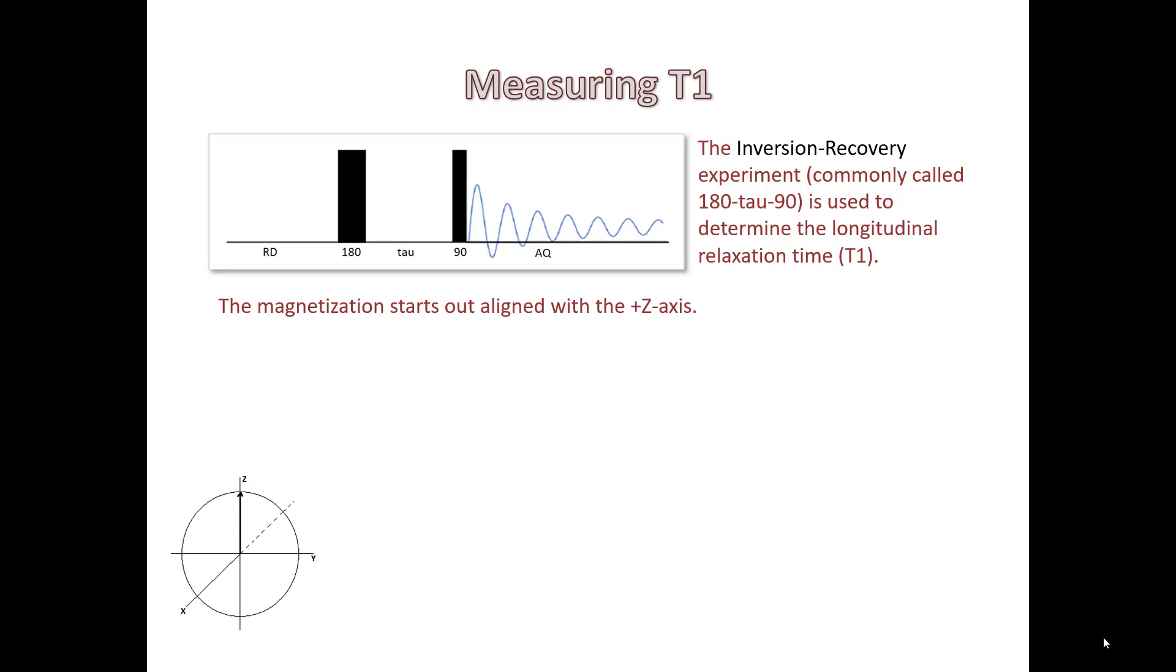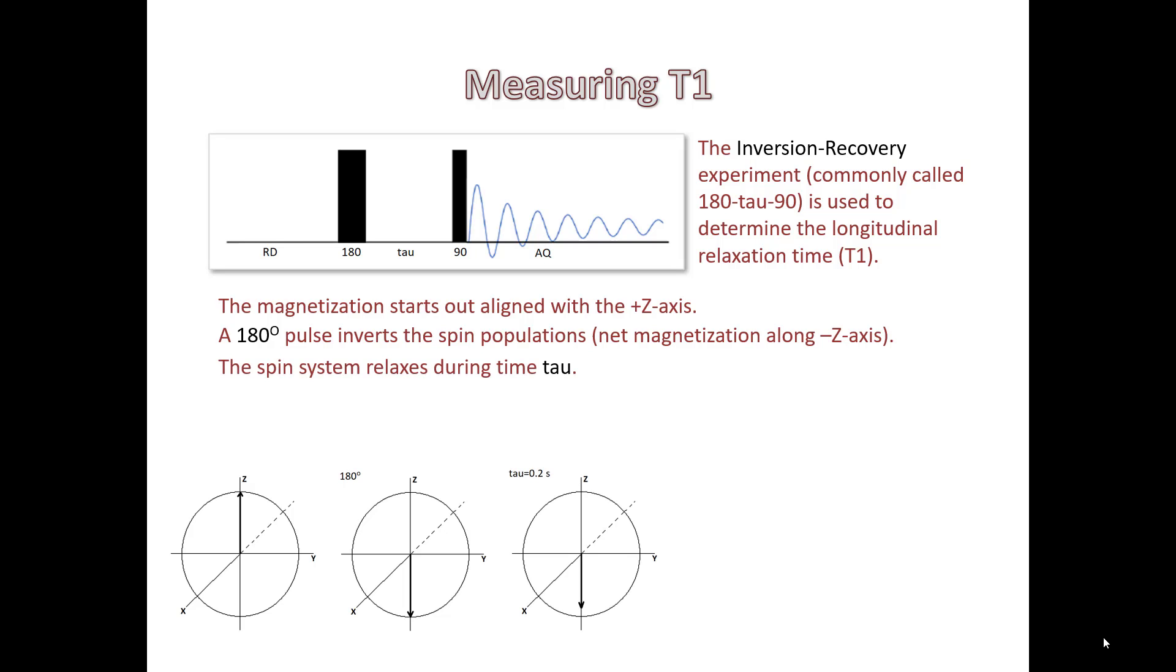The magnetization starts out aligned along the z-axis, just like previously. We pulse with a 180 degree pulse and this inverts the spin populations. We see the magnetization along the minus z-axis now. We wait a short time tau, in this case 0.2 seconds. You see the magnetization vector has decreased a little bit. We give it a 90 degree pulse and transfer magnetization into the xy plane. Notice that we pulse it clockwise along the minus y-axis and our peak is pointing down.